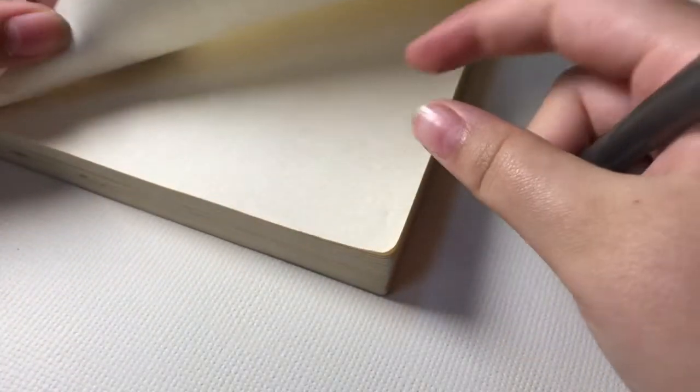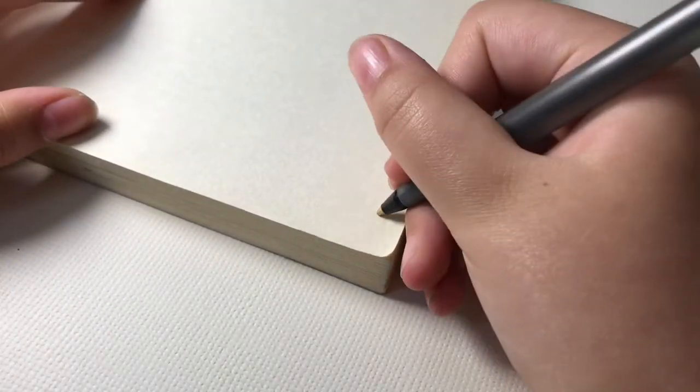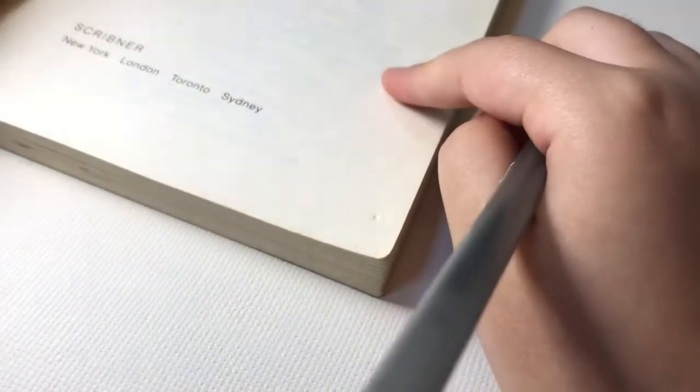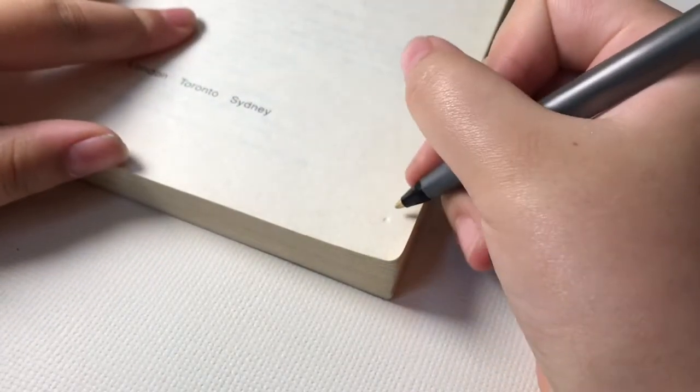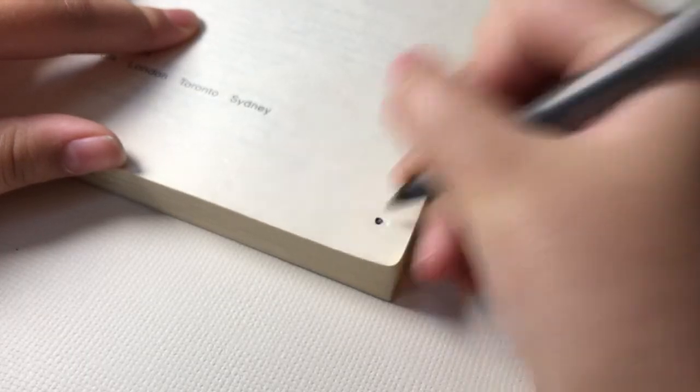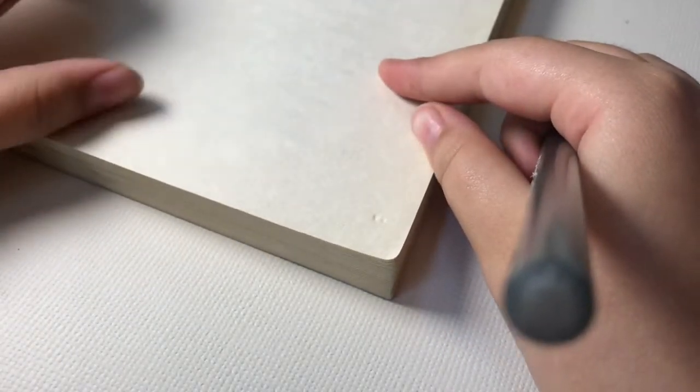So with every page the dot is moving a tiny bit by a tiny bit and later when we flip it you'll see it'll look animated. Animation takes patience. You have to be willing to make at least 20 pages for a flip book to work.